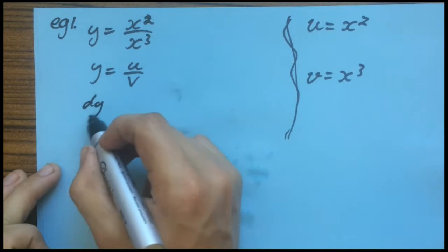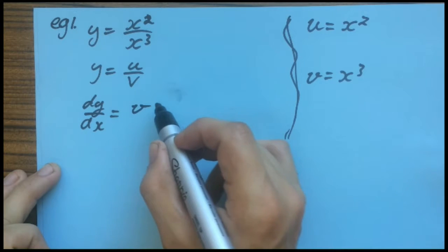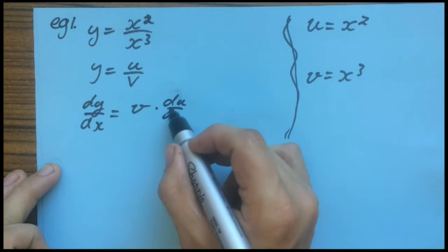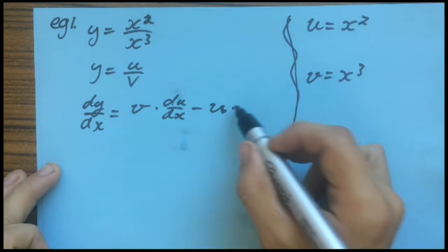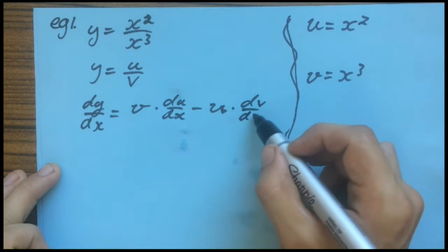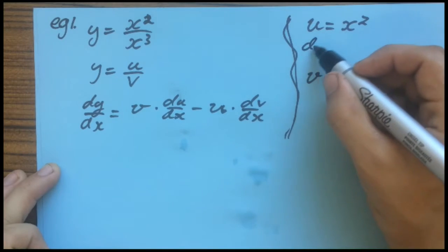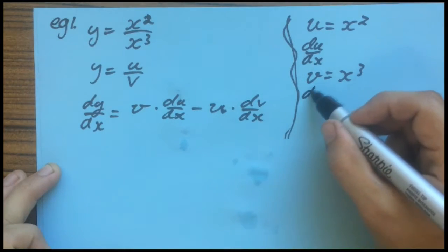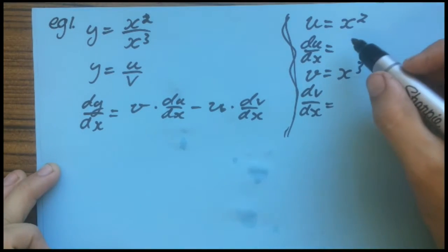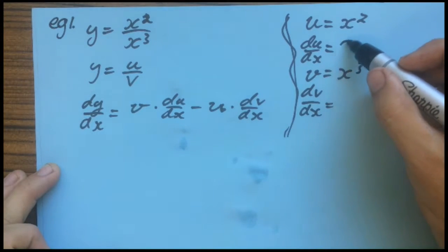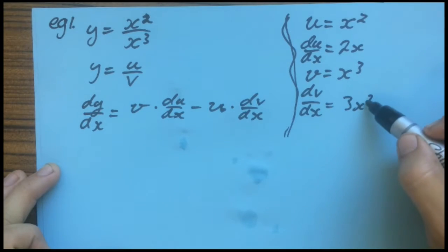When we derive this, the equation is V multiplied by dU with respect to X, minus U multiplied by the derivative of V with respect to X. So we find the derivative of U with respect to X is 2X, and the derivative of V with respect to X is 3X squared.